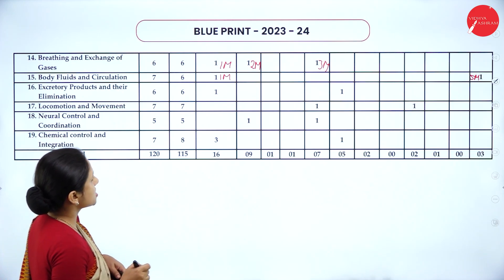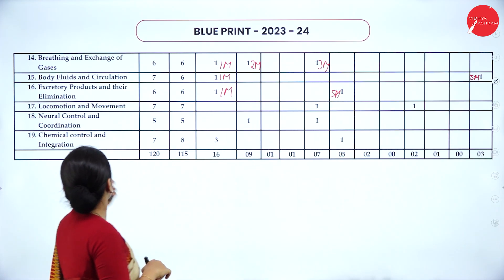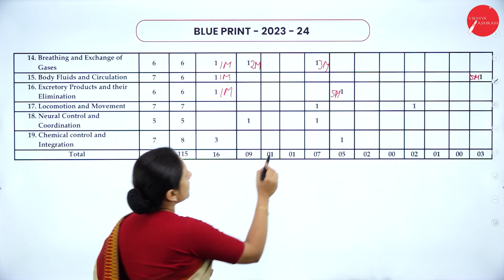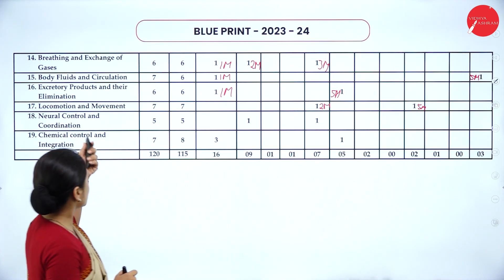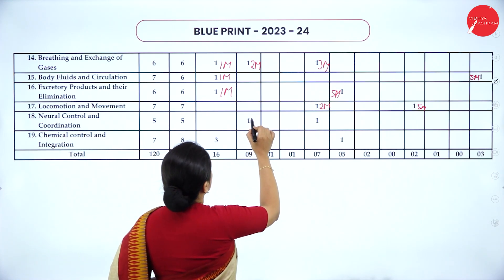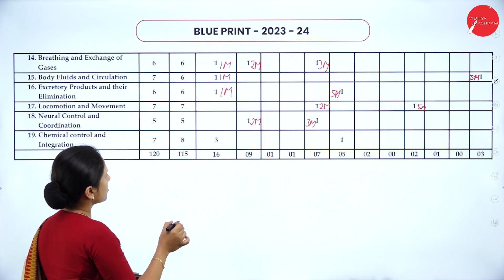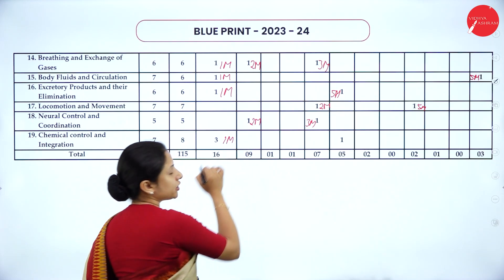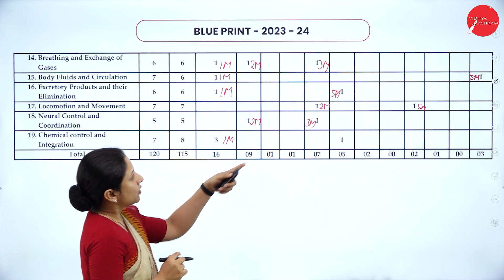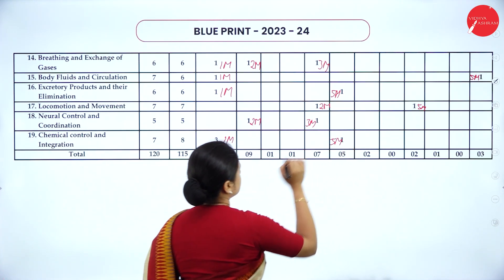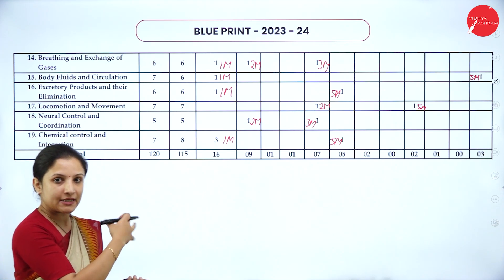Excretory Products and Their Elimination has one MCQ and one long answer. Locomotion and Movement has one 2-mark and one 5-mark question. Neural Control and Coordination has one 2-mark and one 3-mark question. Chemical Control and Coordination has 3 MCQ questions and one 5-mark question. This is how the question paper will be set according to the weightage given for each chapter.